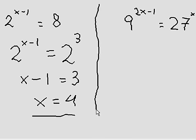Now, on the right side. 9 to the power of 2x minus 1, equals 27 to the power of x. That's an x there.